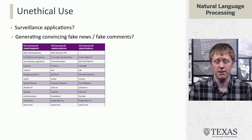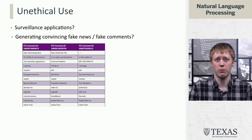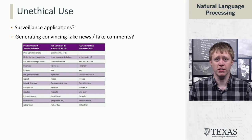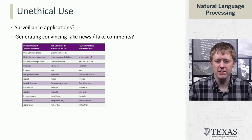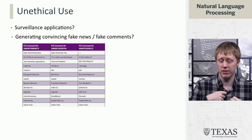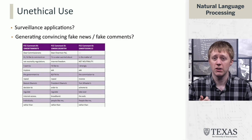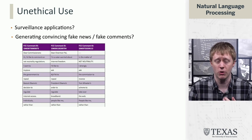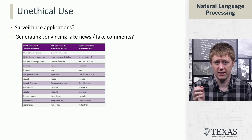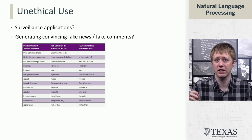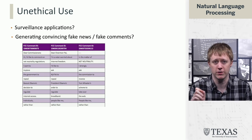Another interesting case came up during the net neutrality debates, where a large number of comments posted against net neutrality were found to be generated from a templated schema, sort of like a Mad Lib. These were possible to detect, but with newer systems like ChatGPT, will that necessarily be possible going forward? There's a large conversation around AI watermarking — can we mark text generated by language models and then detect it later, and can a sufficiently sophisticated actor circumvent a watermark?